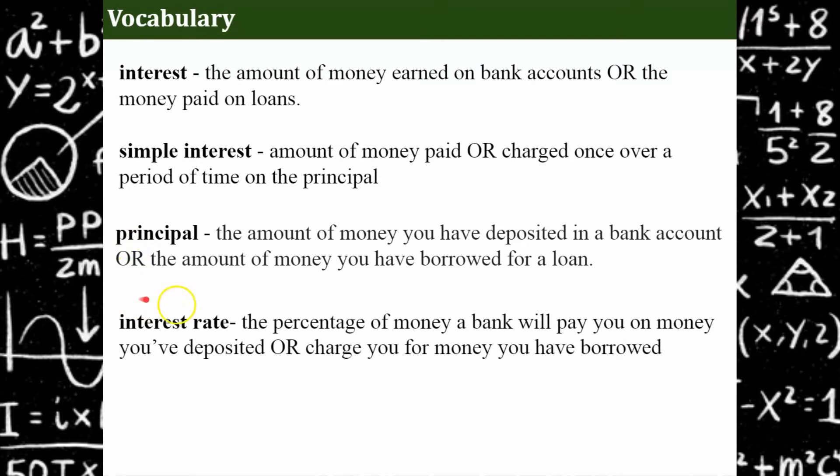Now we have an interest rate. This is the percentage of money a bank will pay you on your money that you've deposited, or they will charge you for the money that you have borrowed. So this interest rate is what we're going to be using to calculate how much money we're earning or paying.